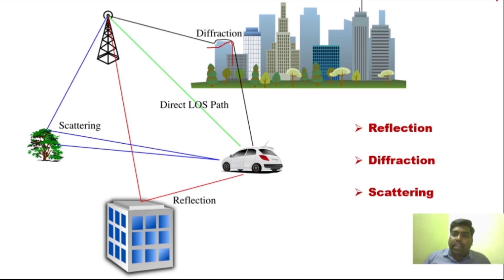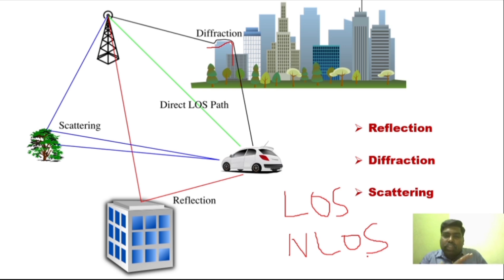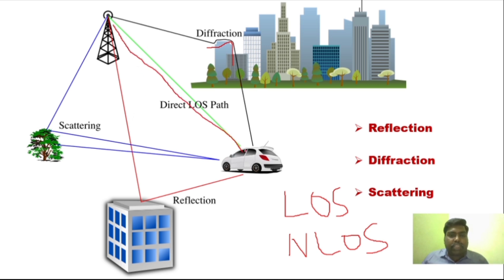But before going to all these concepts, you want to understand what is LOS and what is NLOS — line of sight and non-line of sight communication. Whenever there are no obstacles, no buildings, and there is a direct transmission between the transmitter and receiver — like you can see here, this green line — there is a direct link from the transmitter to the receiver. That is called line of sight communication.